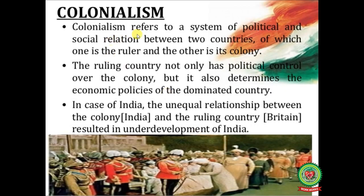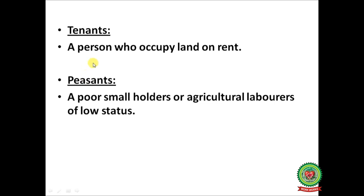Next one is colonialism. Colonialism refers to a system of political and social relation between two countries, of which one is the ruler and the other is its colony. The ruling country not only has political control over the colony but also determines the economic policies of the dominated country. In the case of India, the unequal relationship between India and Britain resulted in underdevelopment of India. A tenant is a person who occupies land on rent and cultivates it. A peasant is a poor smallholder or agricultural laborer of low status.